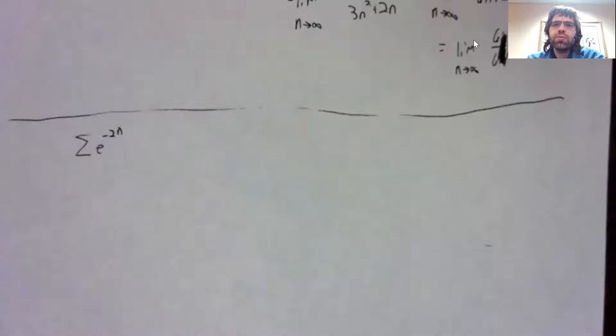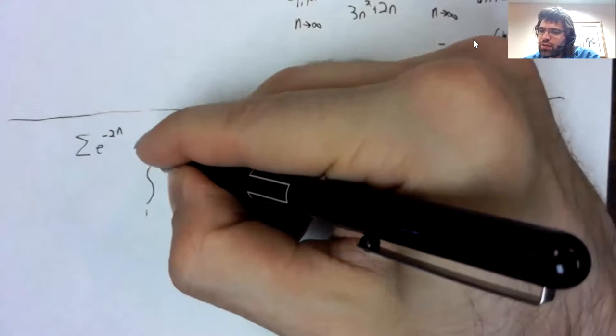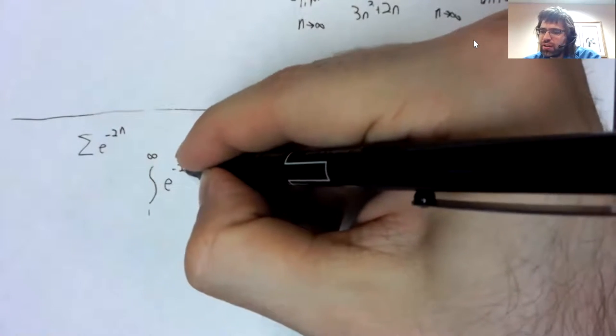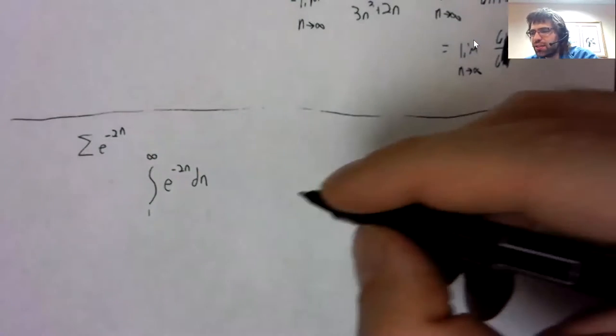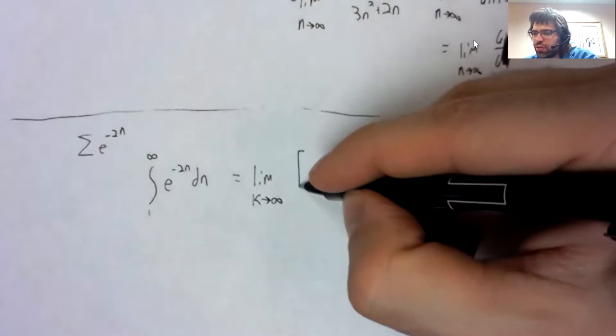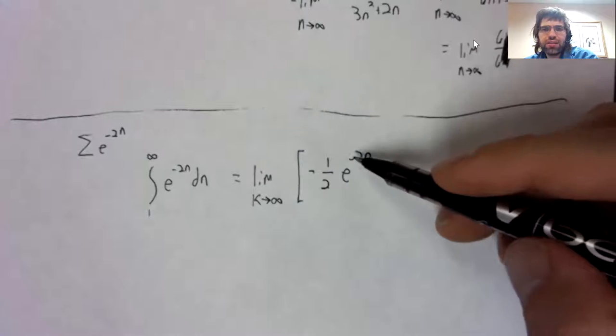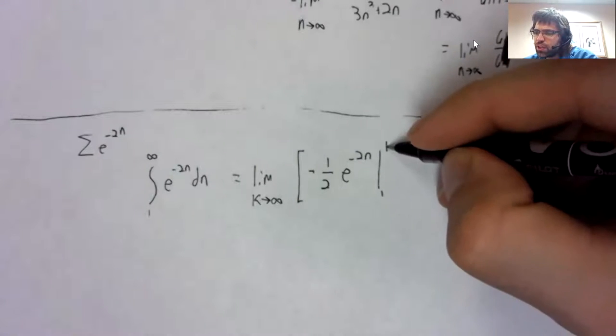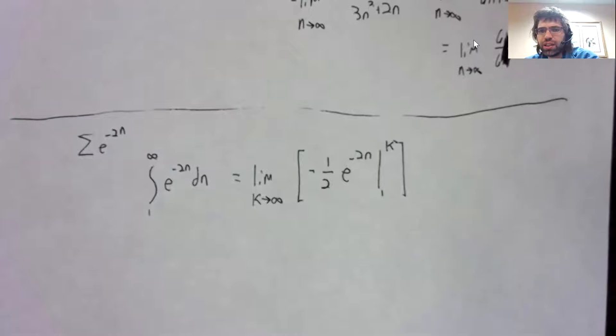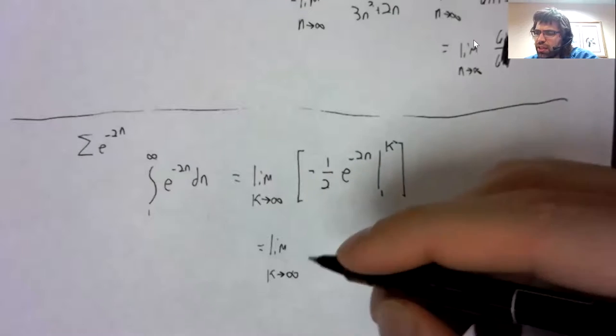So we'll find the integral from our lower bound, doesn't really matter, let's say from one to infinity of e to the negative 2n dn. Let's do a few steps at once here. Here's the antiderivative, and we replace this infinite limit with a k that's going to infinity.